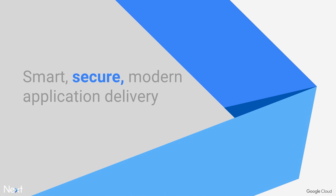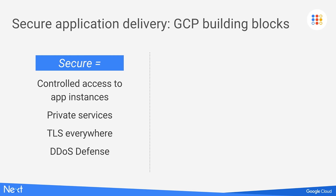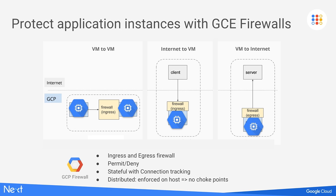Think of any Google services you use — Search, Gmail, or Drive — and you automatically have a secure TLS connection. You have a variety of tools to secure your services in Google Cloud. There are four aspects of secure application delivery: controlled access to application instances, delivering private services, TLS everywhere, and DDoS defense. The first building block is controlling access to instances — determining who gets access and who is denied. A key tool is the GCP distributed firewall. Unlike traditional firewalls that steer traffic to a middle box that becomes a choke point, GCP enforces firewall rules on the application instance itself — hence the term distributed.